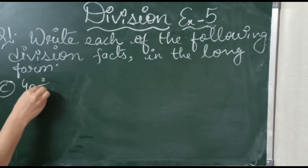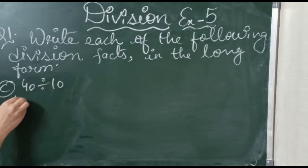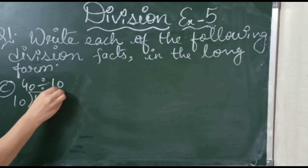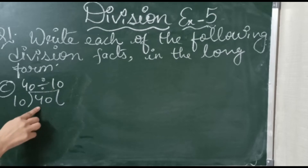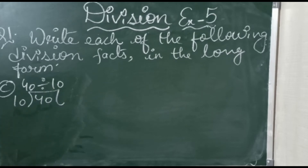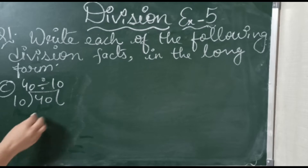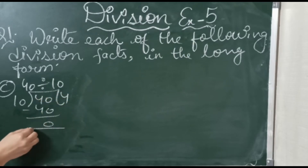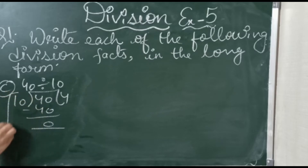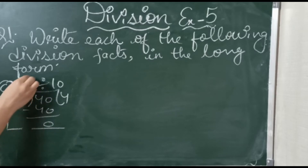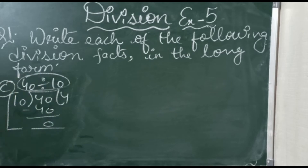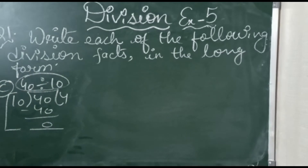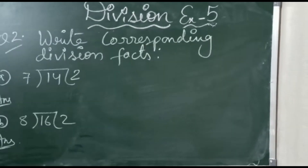Next question: 40 divided by 10. We write 10 outside and 40 inside. Here we check 40 — it is easily in the table of 10. Yes, 4 times. 10 fours are 40, and 40 minus 40 is 0. This is the long form of division, and this is the division fact.